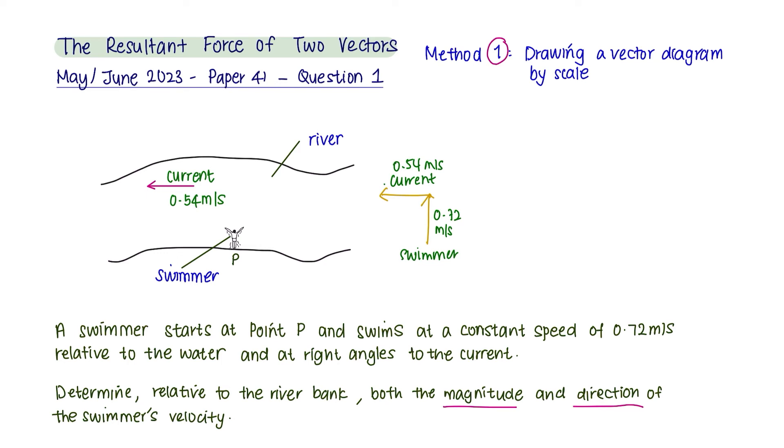So for this question, we will use a scale of 0.1 meters per second to 1 centimeter. So for 0.72 meters per second, the scale here would be 7.2 centimeters.